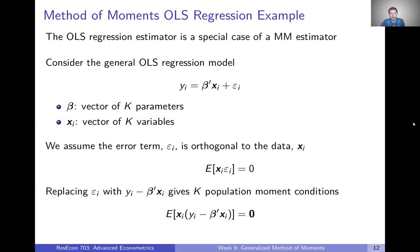One of the assumptions of the OLS model is that the error term epsilon is orthogonal to the data — every one of our variables is orthogonal to epsilon. To write that down mathematically, in expectation each one of our x's times epsilon equals zero. So if we have k x's, we're going to have k moment conditions: in expectation x1 times epsilon equals zero, in expectation x2 times epsilon equals zero, and so on. Now let's note we can actually rewrite epsilon. Since it's our error term, we can rewrite it as y minus this linear combination of beta and x. So let's replace epsilon in this expression with y minus beta times x.